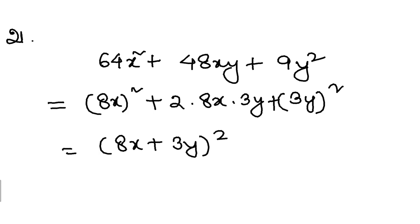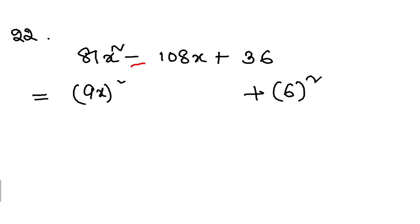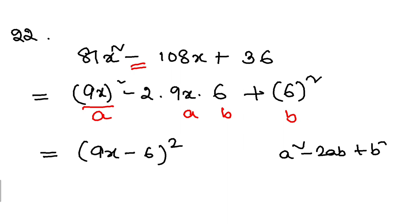Now let's go to question number 22, which is slightly different. 18x square is 9x whole square, and 36 is 6 whole square. But here there is a minus sign — this is a change. So what I will do is write minus 2 into a into b. This is like a square minus 2ab plus b square, which means a minus b whole square. a square minus 2ab plus b square is a minus b whole square.